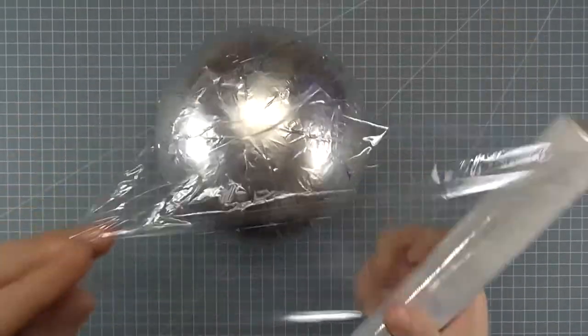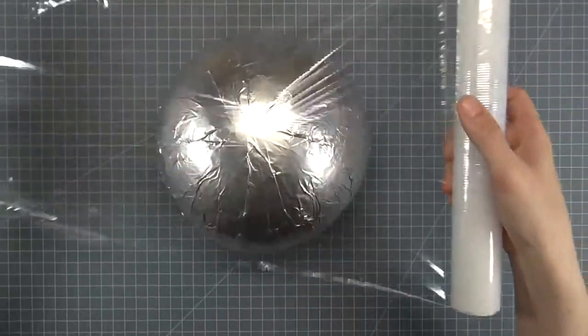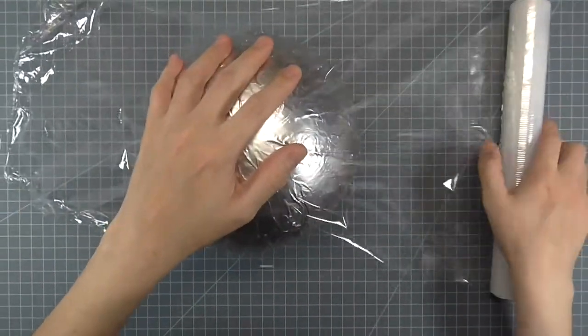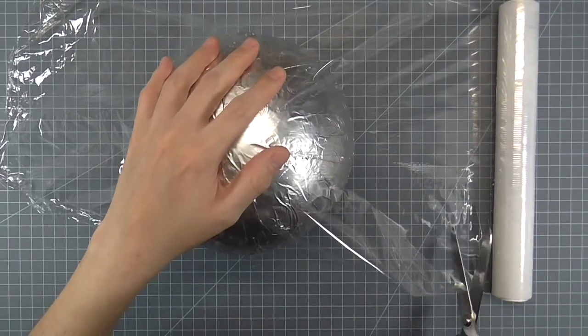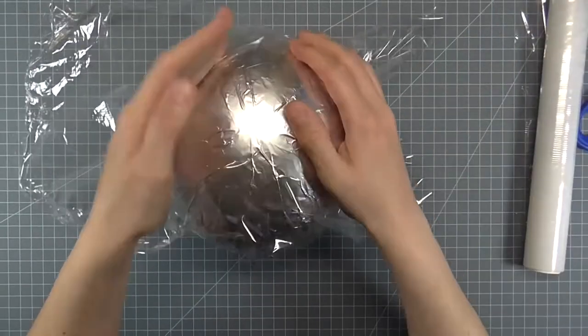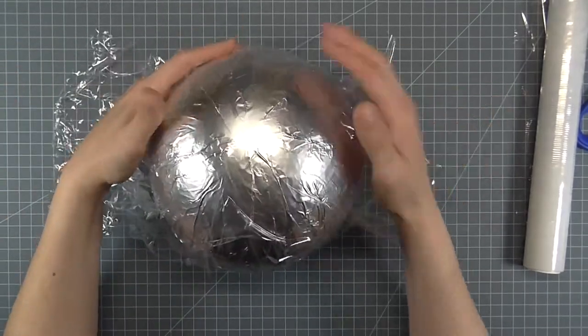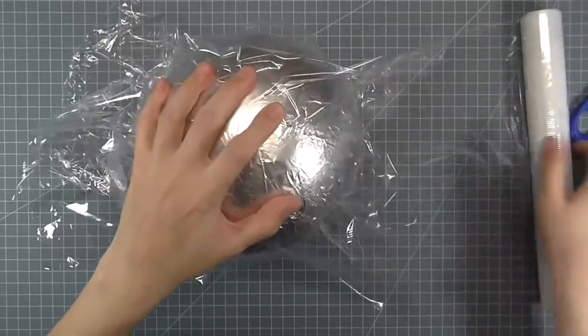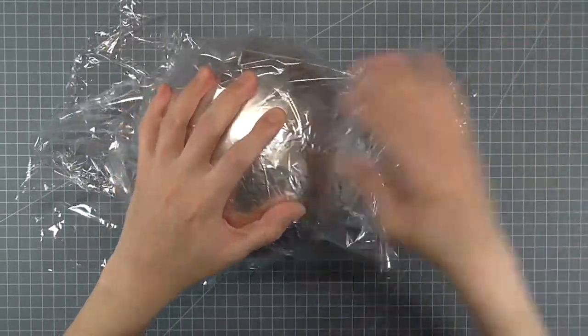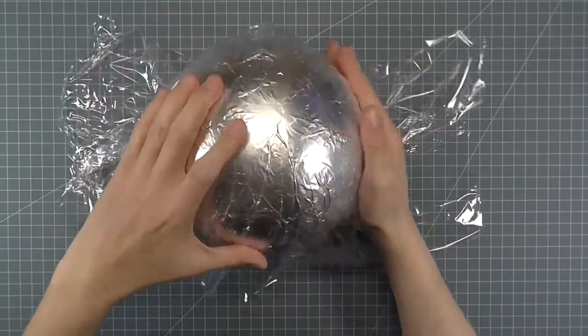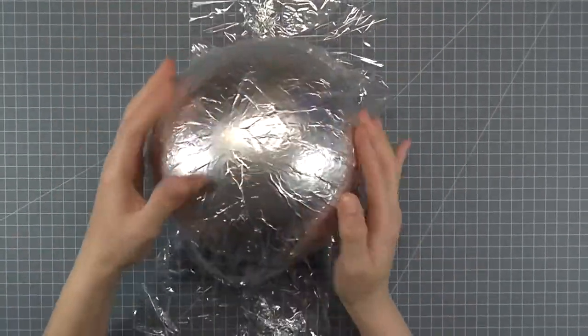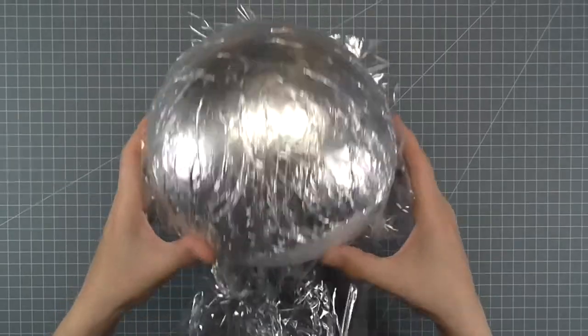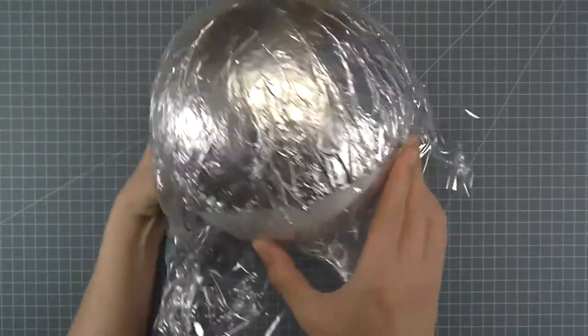Cover the aluminum with cling wrap and smooth it out as much as you can. Use as many pieces as you need to cover the surface.